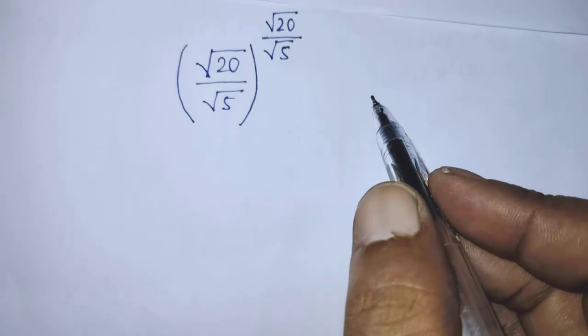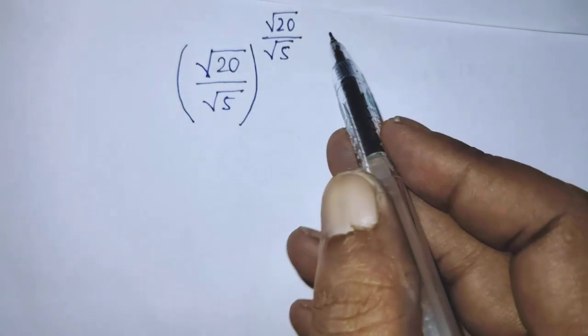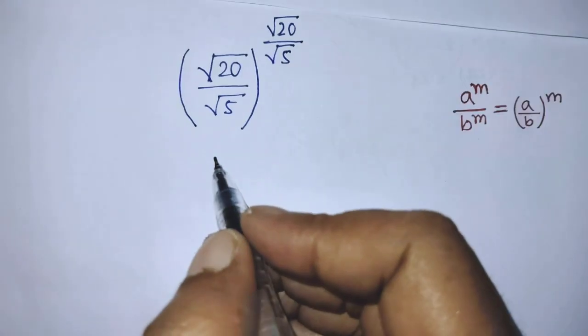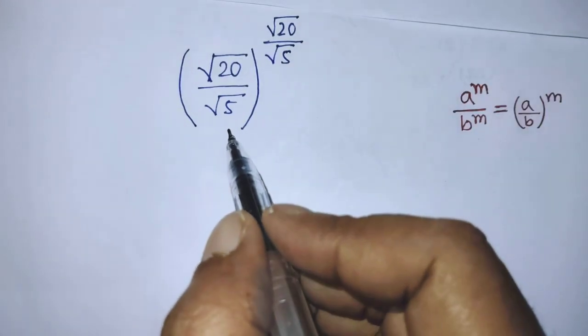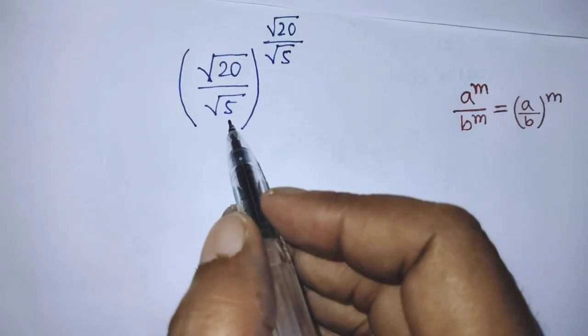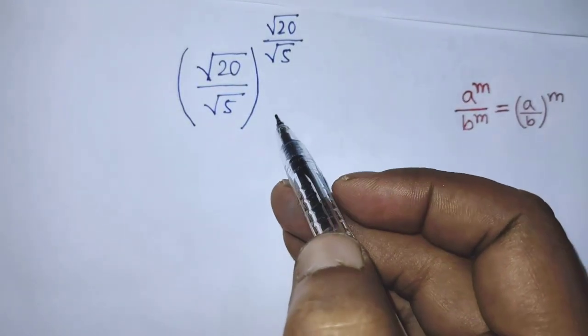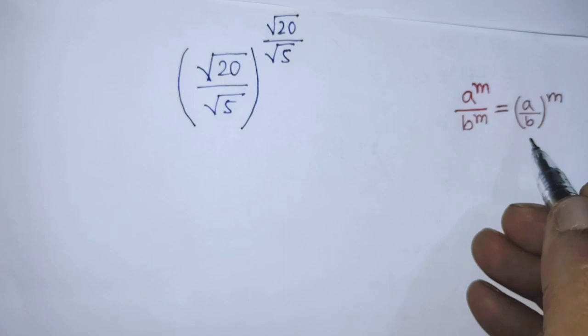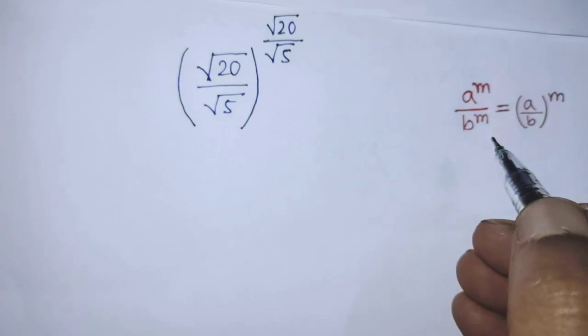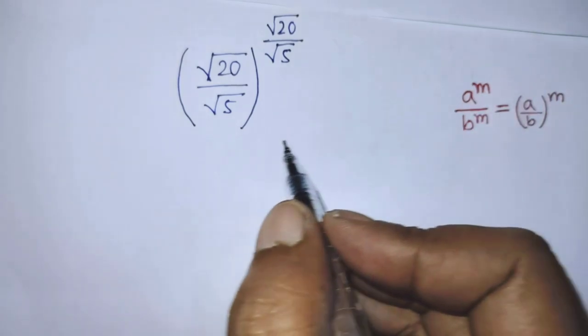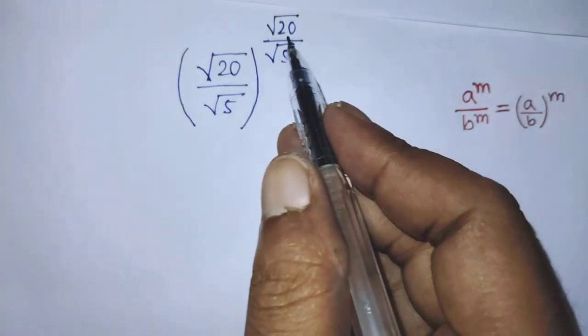To simplify the base and power of this exponential form, we have to apply this formula. In the first step of the solution, according to this formula, we can write from this exponential form...